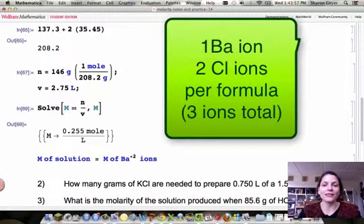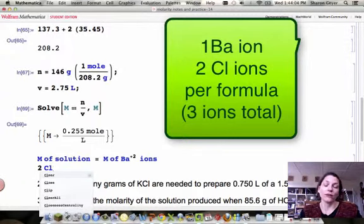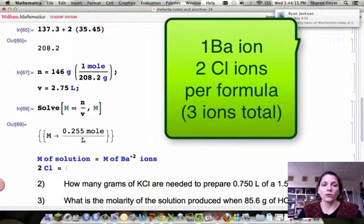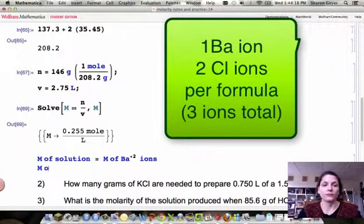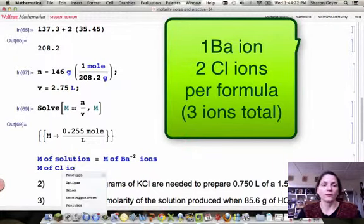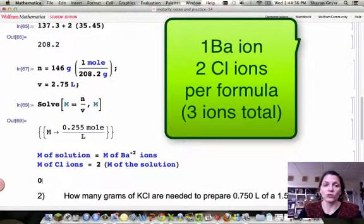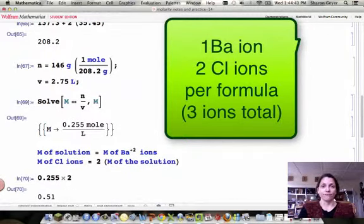Now, that is not the case for the chlorine. Because there are two Cl ions for every one formula unit. So what happens is the concentration of the chlorine ions is twice the concentration of the original solution. So it's two times the concentration. So if we take the concentration, which is 0.255, and we multiply it by two, that tells us that the concentration of the chlorine ions is 0.51 molar.